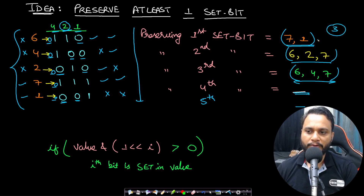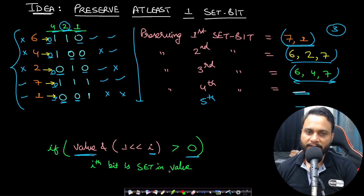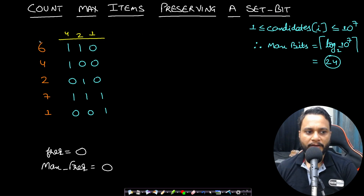We are only required to return the length of the largest combination, not the combination itself. To check if the i-th bit is set in a given value, we take the value and bitwise AND it with 1 left-shifted by i. If this result is greater than zero, then the i-th bit is set. That's how we check each bit position.